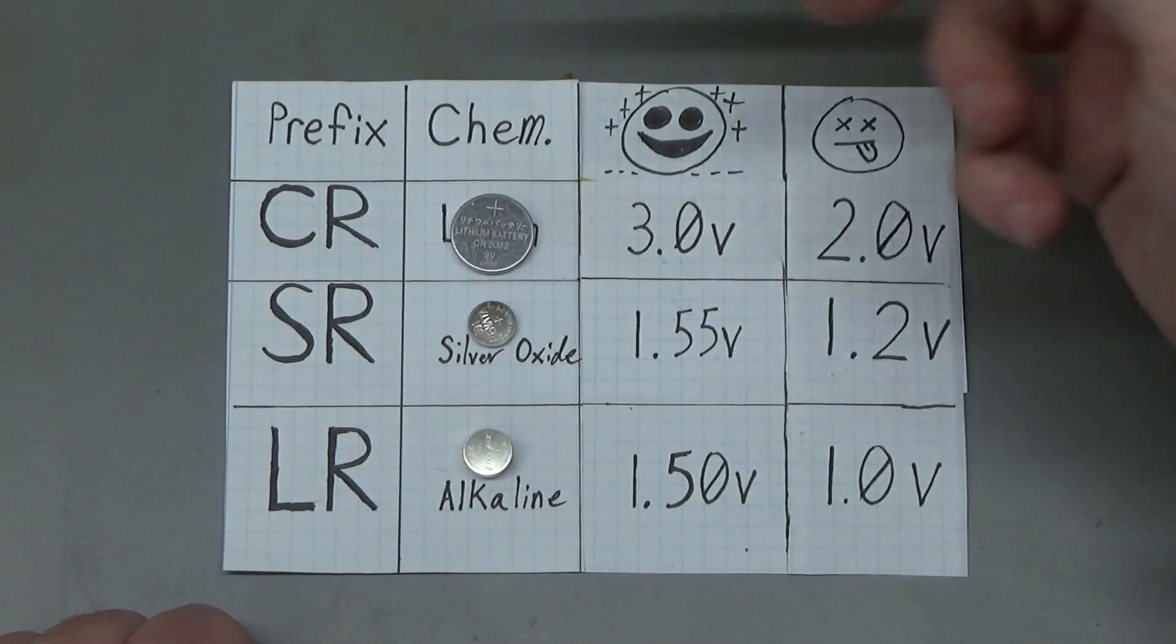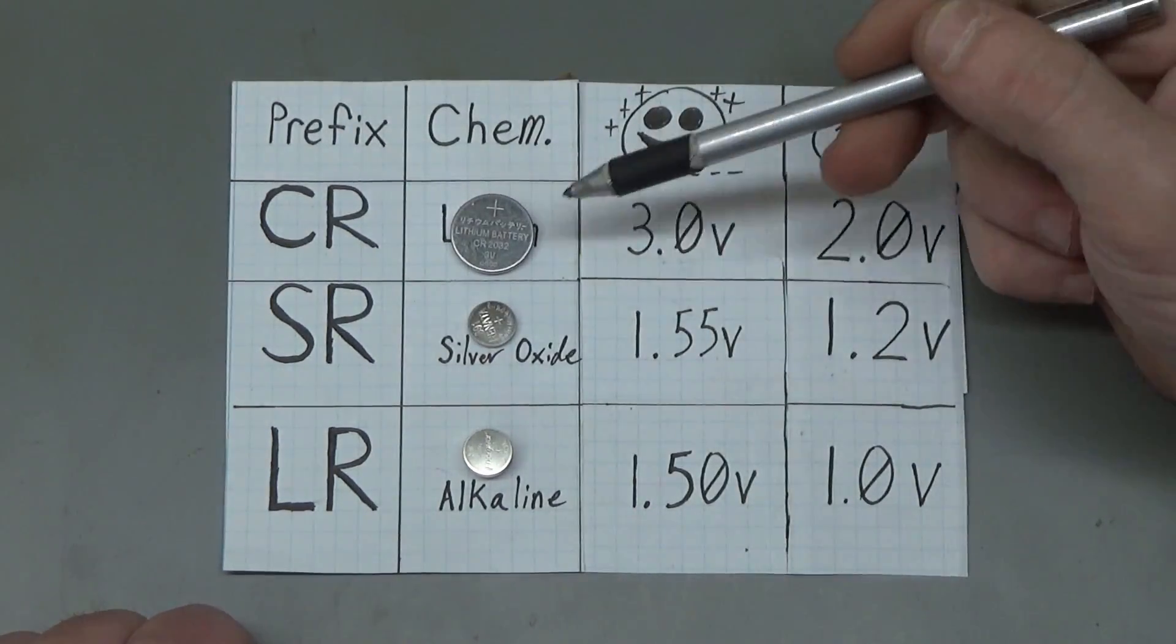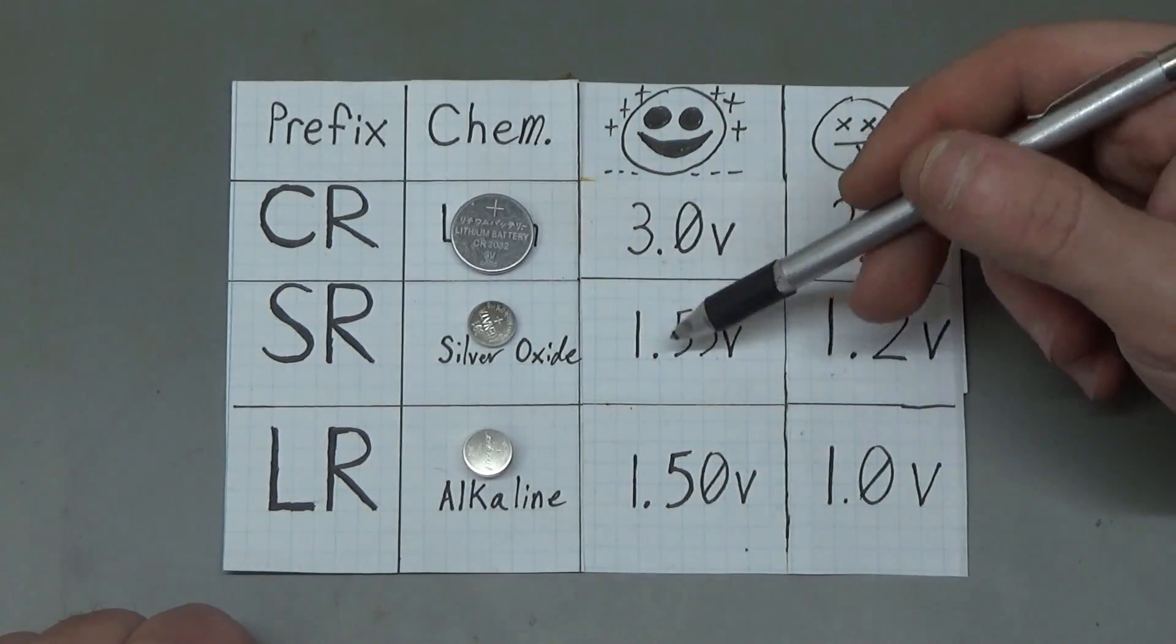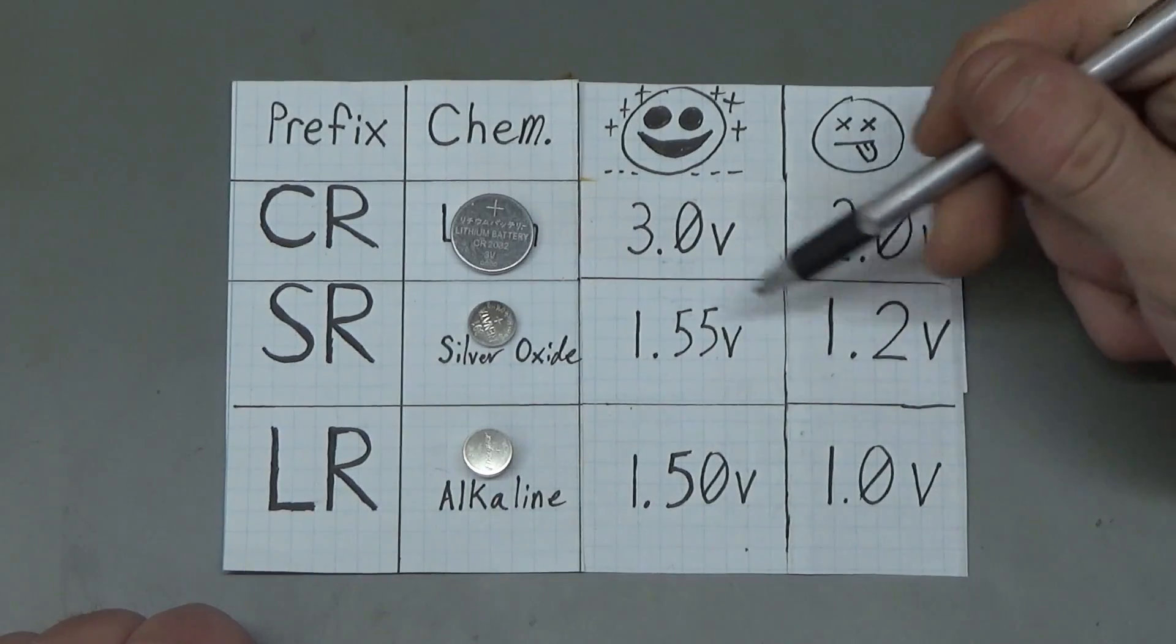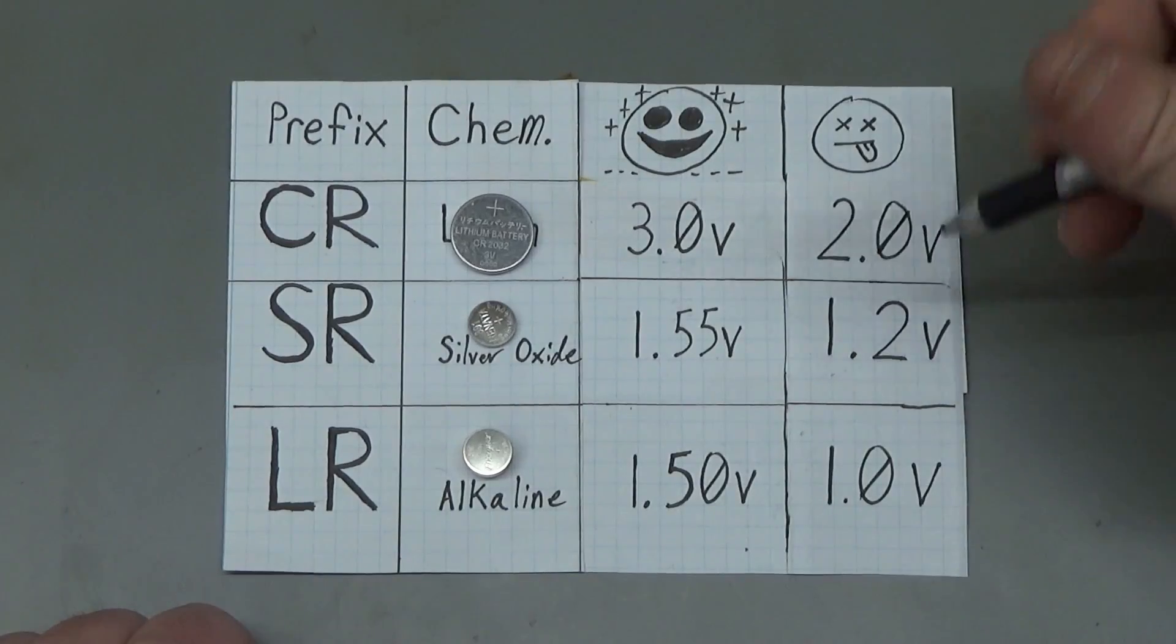And then we have the SR classification—that's going to be silver oxide. It has a nominal voltage of 1.55 volts, so that's a good, happy battery. And when it's dead, you'll be around 1.2 volts.